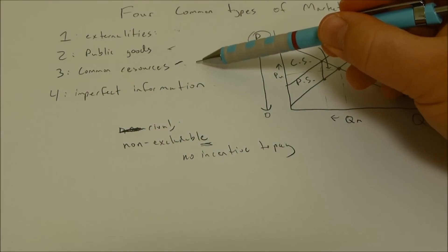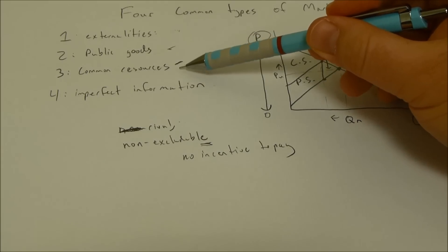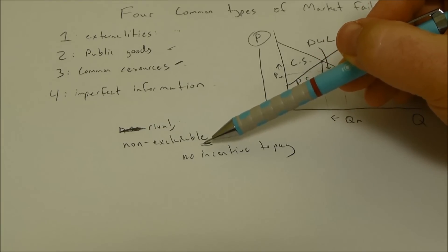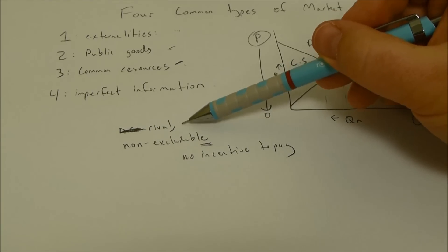The most common example is if you have a shared pasture that you can graze cattle on. This is Hardin's Tragedy of the Commons example. Everybody wants to put their cattle on the pasture because it's non-excludable. You can't keep them from using it, but it is rival.